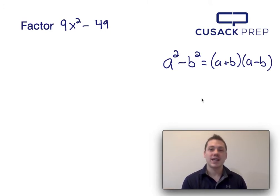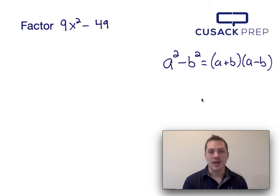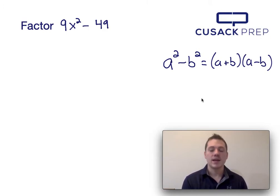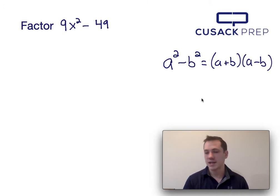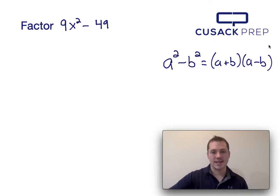The first thing I notice about 9x squared minus 49 is both of these values are perfect squares. Because these are perfect squares and they're separated by subtraction, this can be factored using the difference of squares equation, which I presented down here on the right hand side.